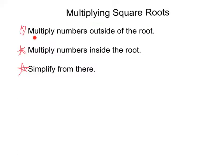When you multiply square roots, you want to multiply first the outside numbers of the root. Those are going to stay outside. Then you multiply the inside numbers of the square root. Those are going to stay inside, and then you can just simplify just like before. Let's do a couple examples.